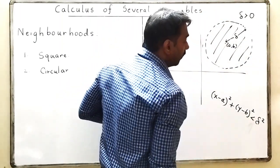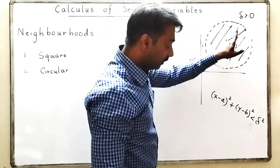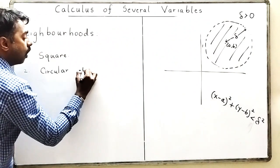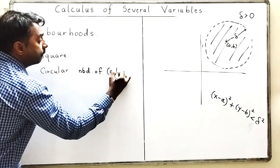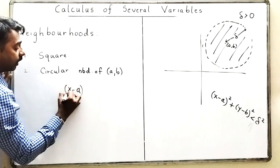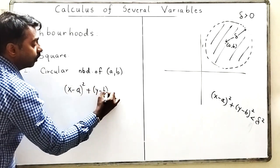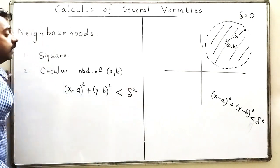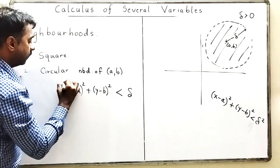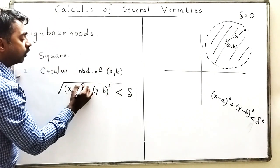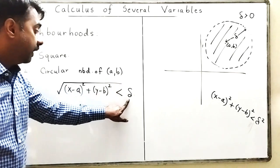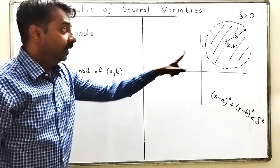Right now I am interested only in the points which are completely inside the circle. That is nothing but a circular neighborhood of point (a, b) of radius delta. I represent it as: x minus a whole square plus y minus b whole square less than delta square. Taking the square root on both sides, the square goes away and I get the square root form. This is the circular neighborhood of point (a, b) of radius delta.